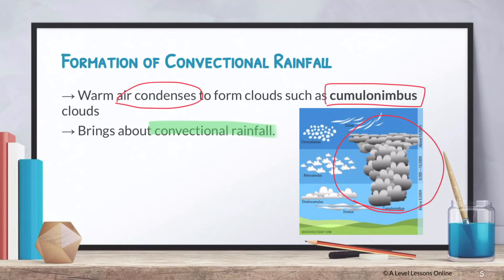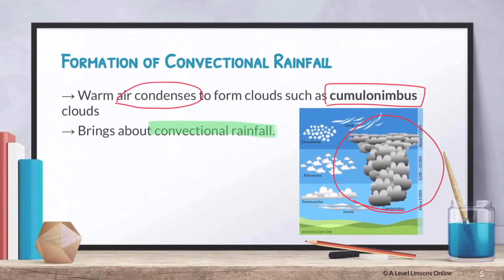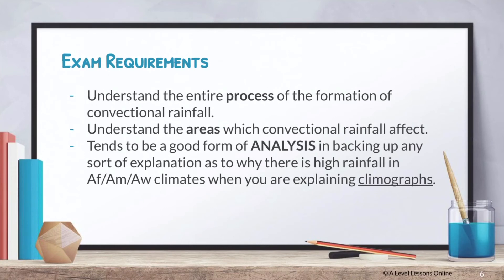The causal link for convectional rainfall formation is very simple — just follow how the rainfall forms and the processes that go along with it. Take note of the causal links, as they are very important when explaining rainfall-related questions, especially in data response questions. For exam requirements, you basically need to understand the entire formation process and the areas where it forms — the humid tropics, including tropical rainforests and tropical steppes.